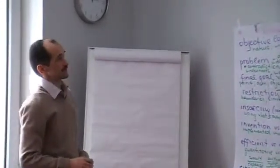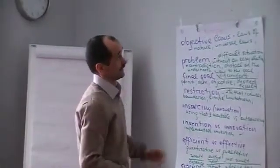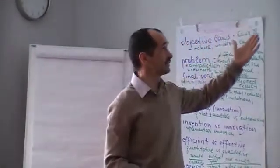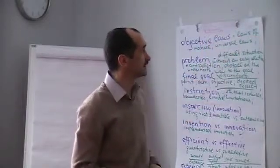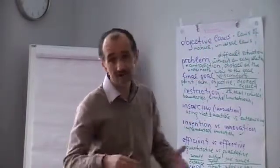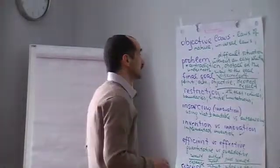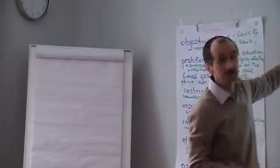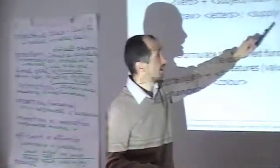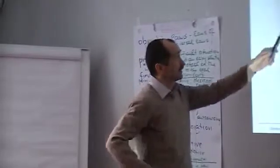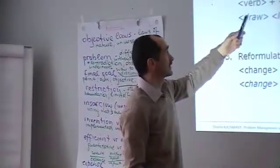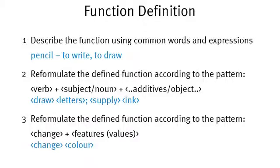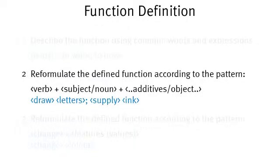For instance, if you have a pencil. The pencil function can be defined as the first approximation to write, to draw. If you try to define it more precisely, we add some adjectives in order to improve the meaning. In this case, we obtain something like draw letters, or it can be another function like supply ink to the paper.